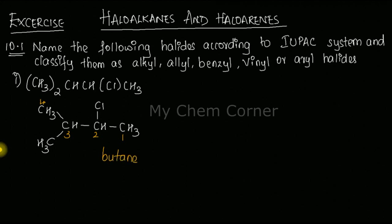The parent hydrocarbon is butane — a four-carbon chain. We have two substituents: on position two we have a chlorine atom, and on position three we have a methyl group. So it's 2-chloro and 3-methyl. When CH₃ appears as a prefix, it becomes 'methyl'. When naming the compound, we arrange substituents in alphabetical order.